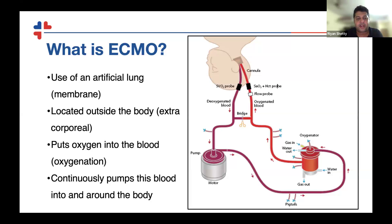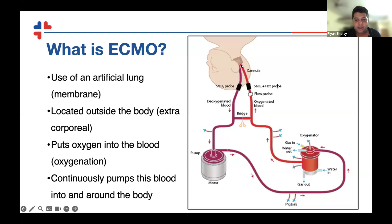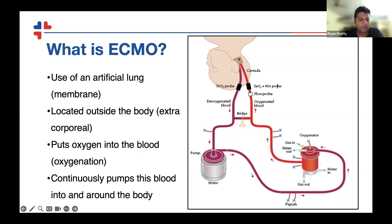ECMO is the use of an artificial lung — a membrane located outside the body, so it's extracorporeal. It puts oxygen into the blood and continuously pumps this blood into and around the body. As you can see in this diagram, it shows a child with a cannula in the neck: deoxygenated blood comes out into the pump, goes into the oxygenator, gets oxygenated, comes out at the bottom of the oxygenator, and goes back into the patient. The IJV is the venous cannula and the arterial cannula is in the common carotid.